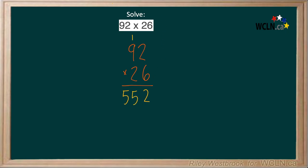Now we're going to multiply the 2. Since the 2 is in the place value of the 10s, we have to add a 0. 2 times 2 is 4. 2 times 9 is 18.